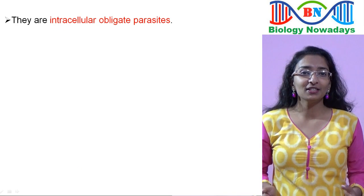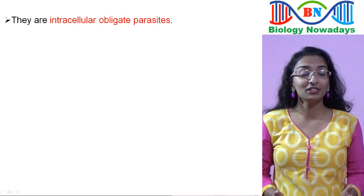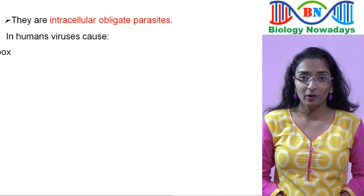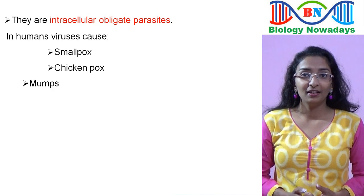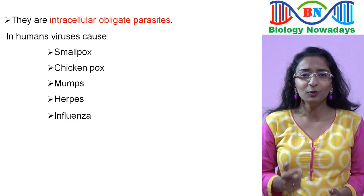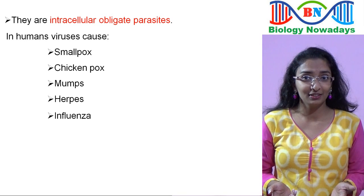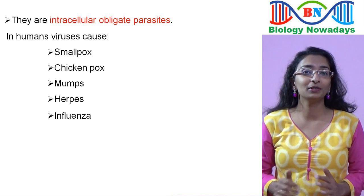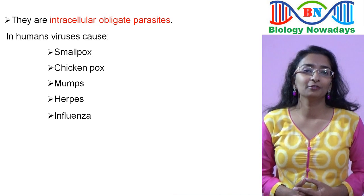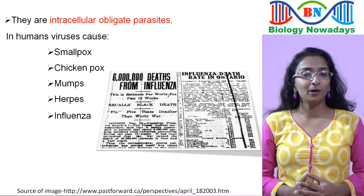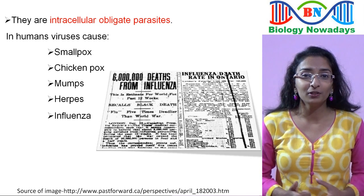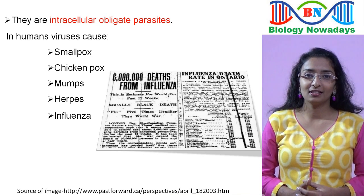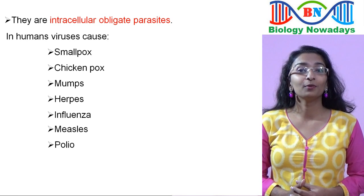Viruses are intracellular obligate parasites, which means they are strict parasites inside a living cell. In humans, they cause diseases such as smallpox, chickenpox, mumps, herpes, and influenza. Did you know about the 1918 influenza pandemic? It is described as one of the deadliest natural disasters in human history. About 500 million people were affected around the world, and it was reported that 6 million people died because of it. Other diseases caused by viruses include measles, polio, rabies, and AIDS.